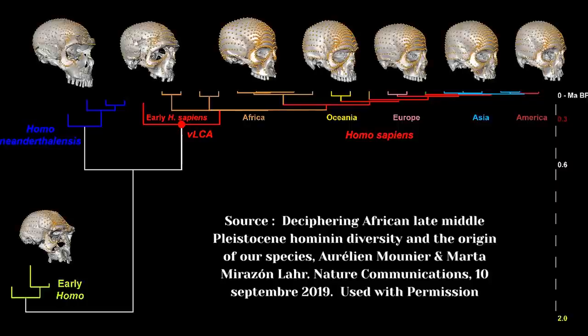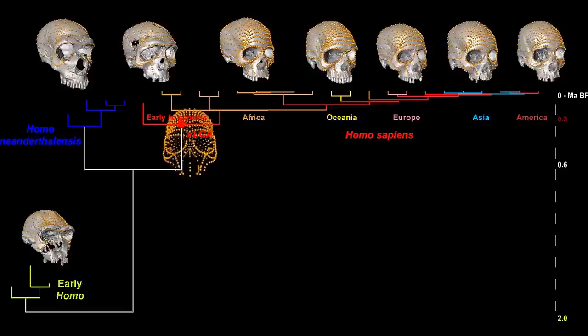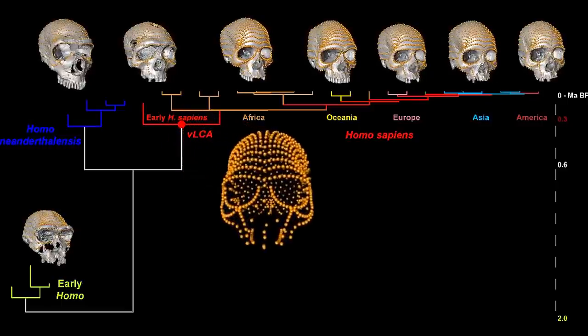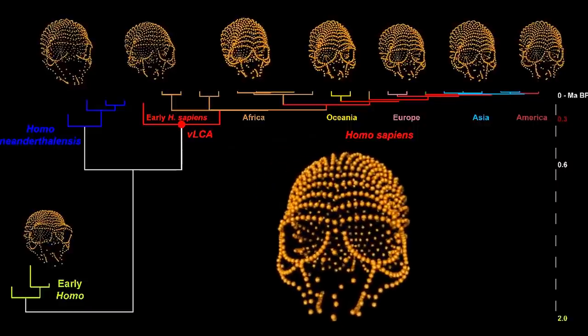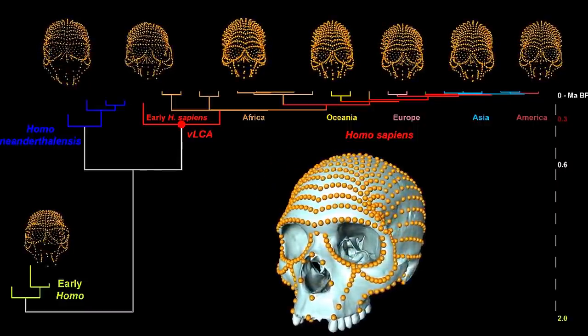including Neanderthals but excluding the archaic African skulls, they estimated what the skull of a supposed last common ancestor looked like in the early part of the Middle Stone Age. They then compared the virtual skull to the five most complete skulls from that time.